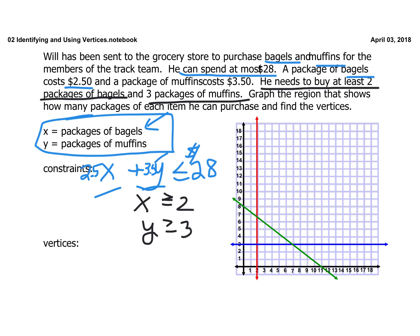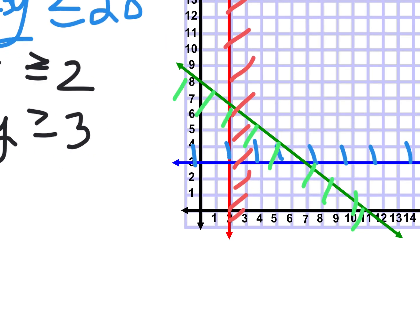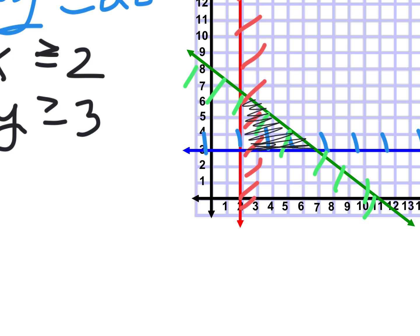If I graph these three equations, they'll probably cross. x greater than or equal to 2 is a red vertical line. y greater than or equal to 3 is a blue horizontal line. And the green one — 2.5x plus 3.5y less than or equal to 28 — I shade under it. Look at that: I've got a little triangle forming, and the overlap is the feasible region.